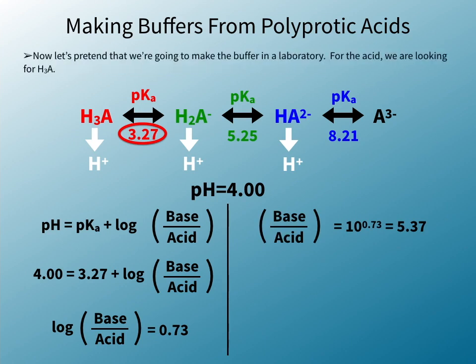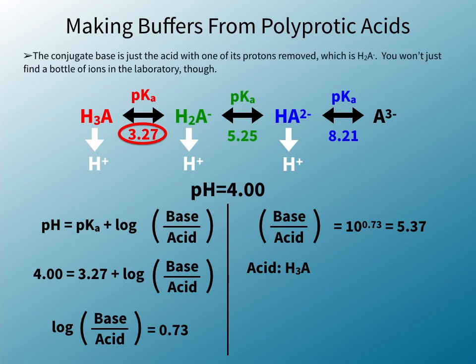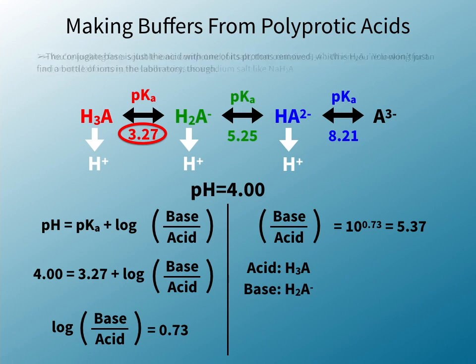Now let's pretend that we're going to make the buffer in the laboratory. For the acid, we're looking for H3A. The conjugate base is just the acid with one of its protons removed, which is H2A⁻.